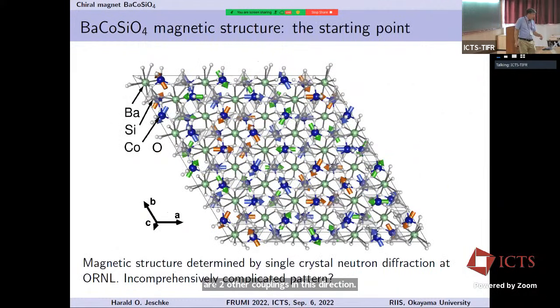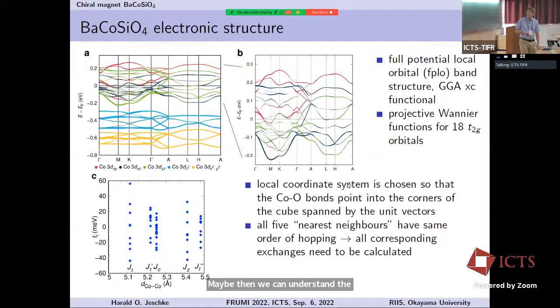Here is the problem I saw in the beginning of this project. In Oak Ridge, they had done very nice neutron diffraction experiments and had found this magnetic structure. If you look at this structure, it looks comprehensively complicated. How do you explain this structure based on these six exchange paths? That was the question. Let's try to do the calculation. Let's try to figure out what the exchanges are. Maybe then we can understand the magnetic pattern.